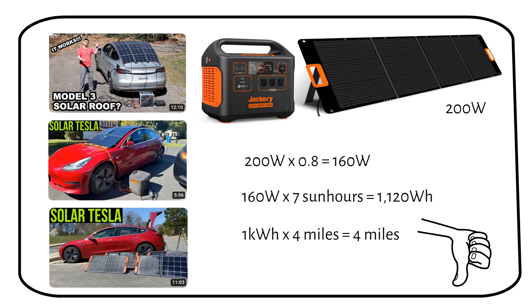This is also calculated in favorable situations, summertime in Las Vegas with 7 sun hours. In reality, you will get less than 4 miles.